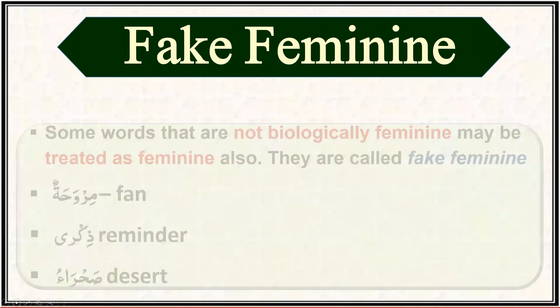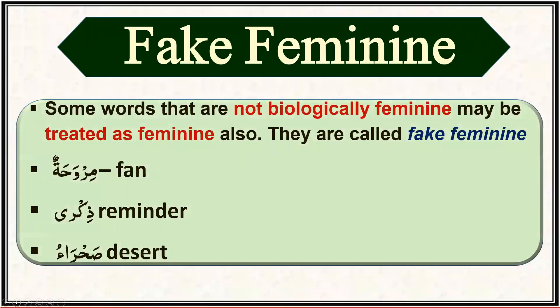When we talk about fake feminines, in every language there are different principles dealing with them. Fake feminines are those words which are not biologically feminine but are treated as feminine because Arabs call them feminine. We do not have any specific biological principle, but we simply consider what Arabs call feminine. Examples include mirwahatan (fan), zikra (reminder), and sahra (desert).